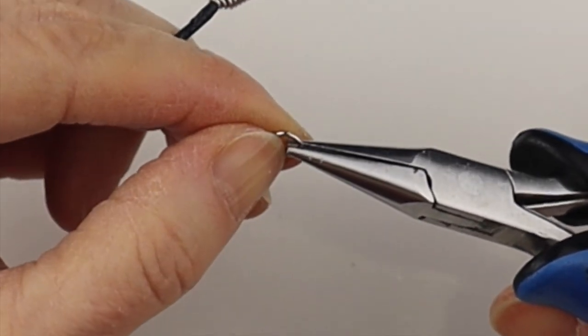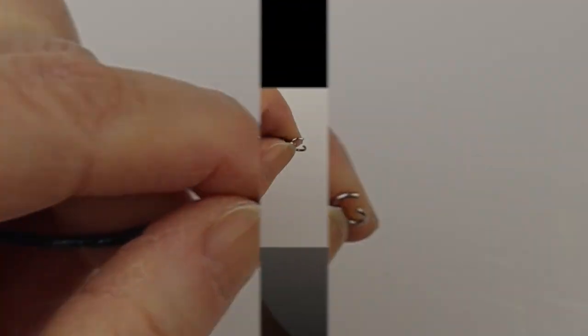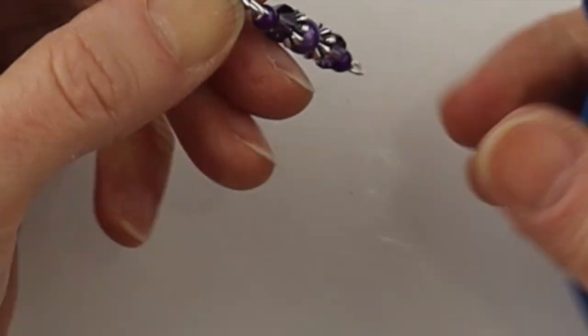So after that we'll take a jump ring, slide it on the loop, and add our beaded connector. Close up the jump ring.